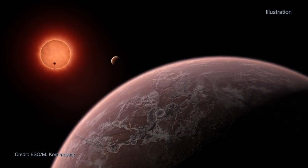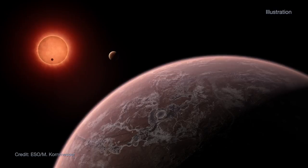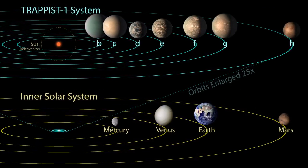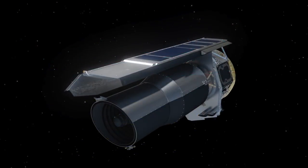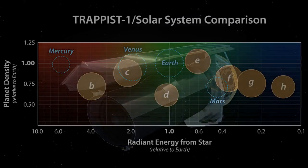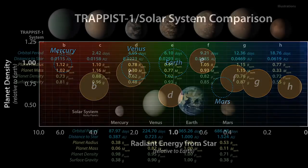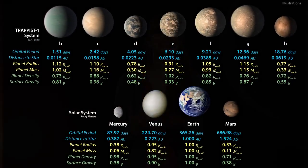The TRAPPIST-1 system provides the best opportunity we currently have to study Earth-sized exoplanets. Over the next few years, Hubble and other telescopes will work together, each contributing important observations, so for the first time ever, we will have an in-depth understanding of a set of terrestrial planets outside our solar system.